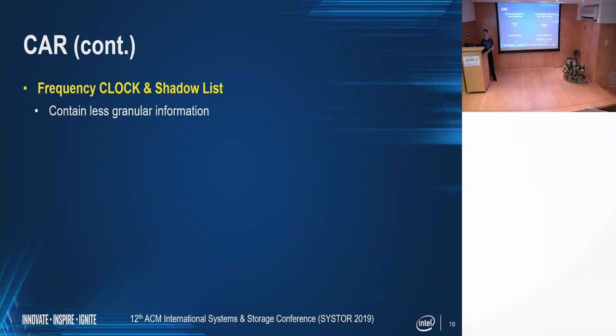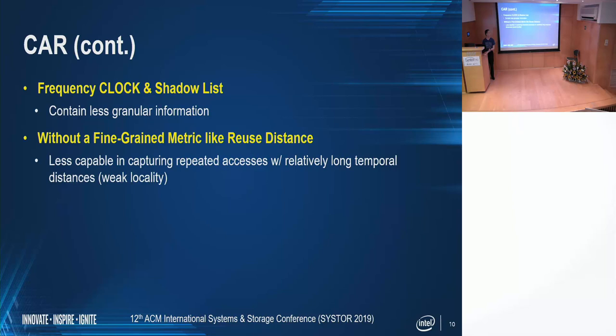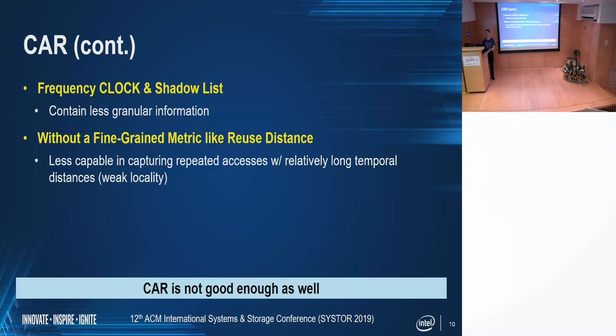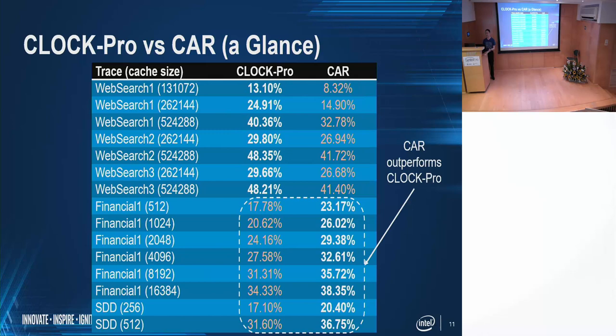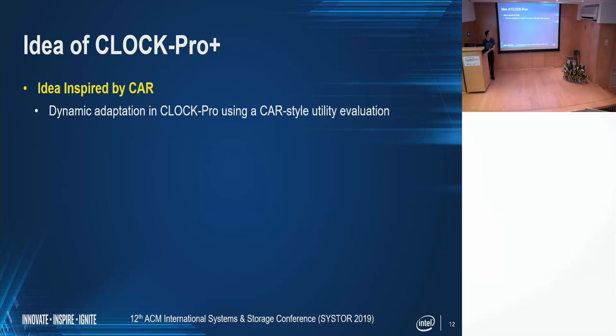CAR adapts well to LRU-friendly workloads. However, the frequency clock and shadow list contain less granular information. Without a fine-grained metric like reuse distance, it is less capable of capturing repeated accesses with relatively long temporal distances, that is, weak locality. In that sense, CAR is not good enough as well. Comparing the two policies on a set of selected configurations, sometimes CLOCK-Pro outperforms CAR substantially and sometimes vice versa. There is no consistent winner between the two.